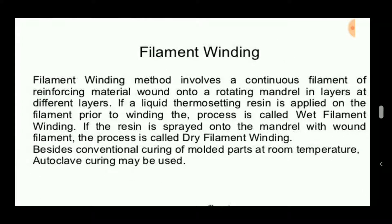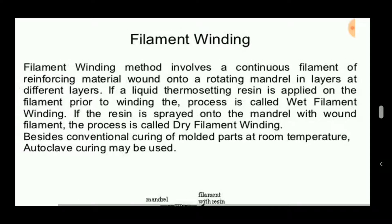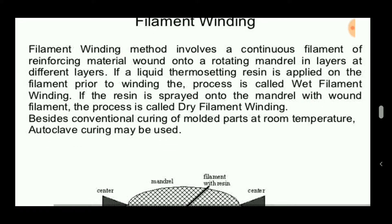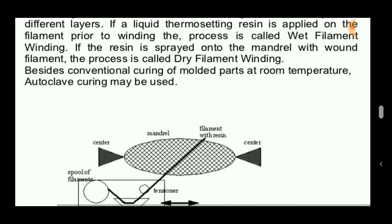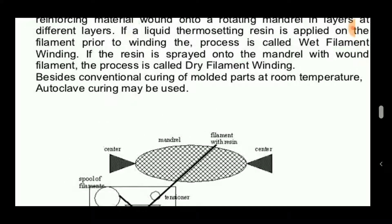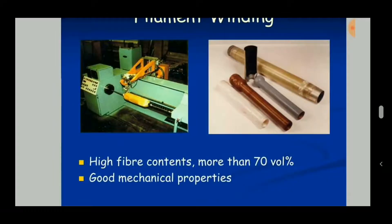The filament winding process involves a continuous filament of reinforcing material wound on a rotating mandrel in layers at different angles. If a liquid thermosetting resin is applied on the filament prior to winding, the process is called wet filament winding. If the resin is sprayed onto the mandrel, it is called dry filament winding.